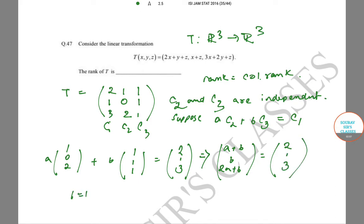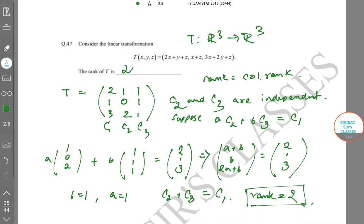And the third component is consistent: 2a+b is actually equal to 3. We get that c₂+c₃ is equal to c₁. So c₁ is a linear combination of c₂ and c₃, and hence rank is equal to 2. The correct answer is 2. Let us move on to the next problem.